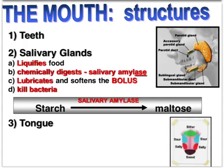The first place food makes contact is the mouth, which functions in ingestion as well as mechanical and chemical digestion. The teeth grind food into smaller parts to increase surface area. Four sets of salivary glands liquefy food through saliva, which contains salivary amylase — an enzyme that breaks starch down into maltose. Maltose is still a disaccharide, so further chemical digestion is needed. The saliva also lubricates and softens the food, now called a bolus, and kills bacteria in the food.